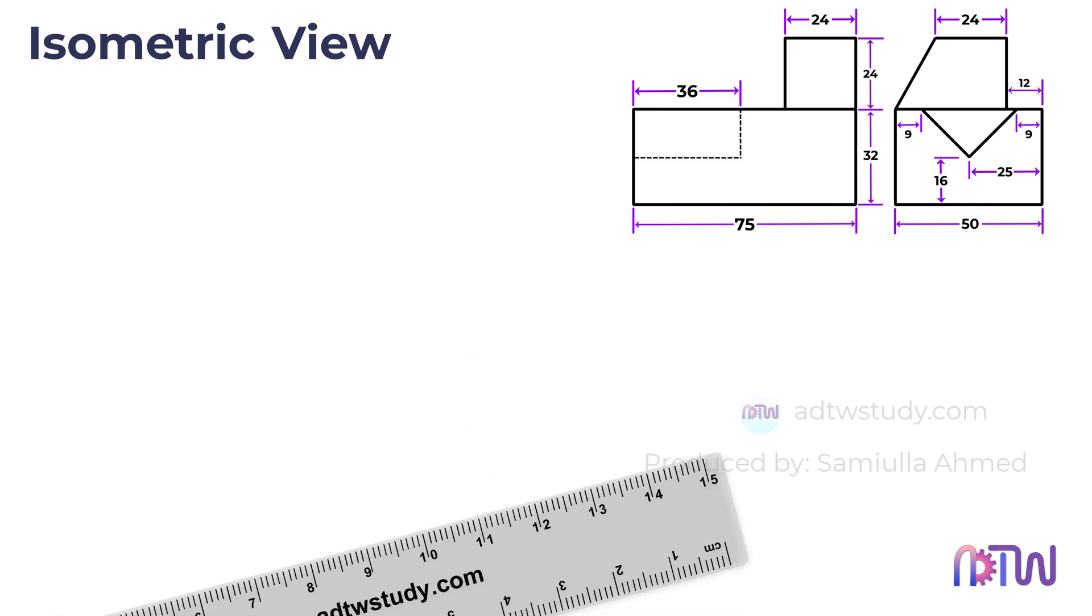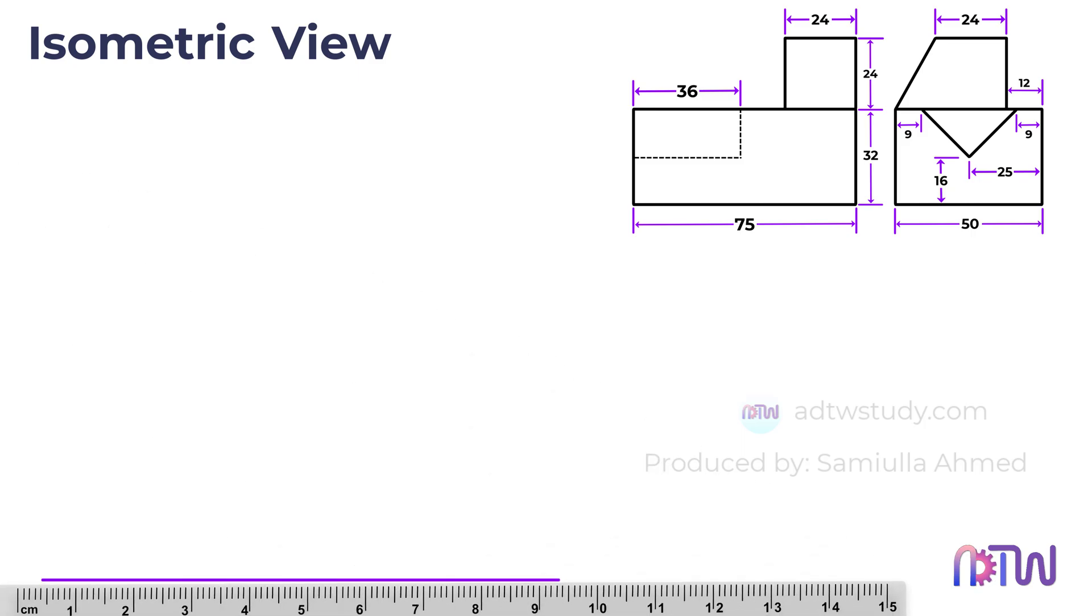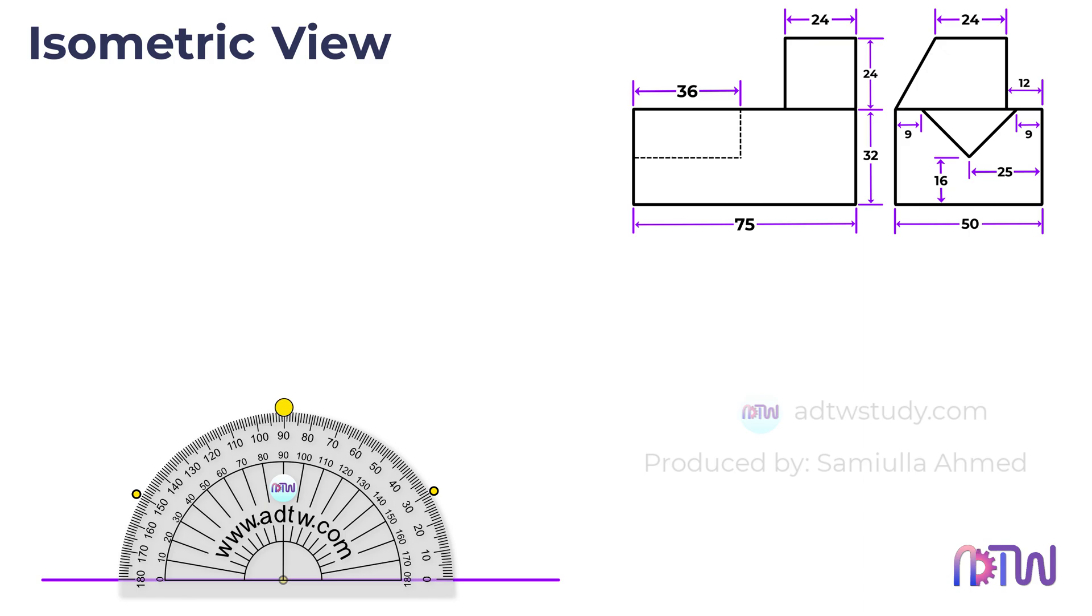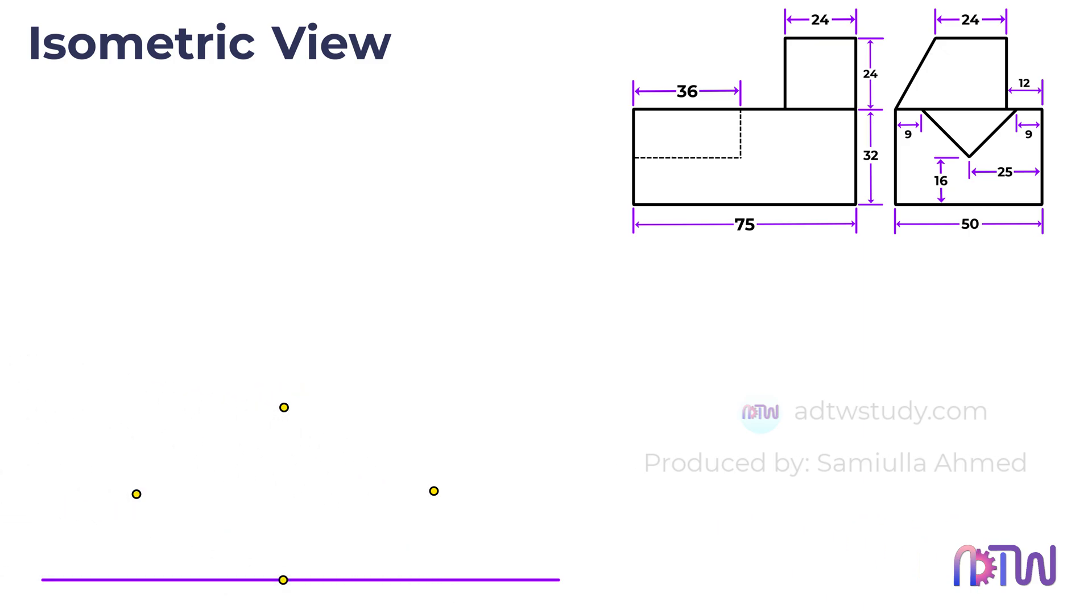To do this, take a ruler and draw a horizontal line. Then mark a center point on this line. Next, take a protractor and mark 30 degrees on both sides of the center point, as well as 90 degrees. Draw lines passing through these points from the center point.